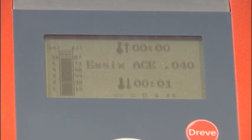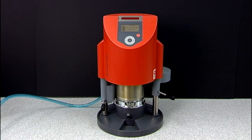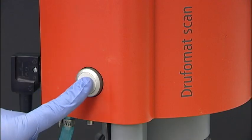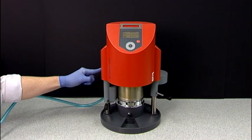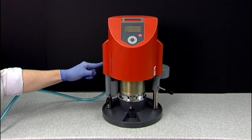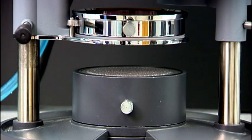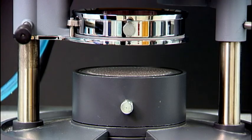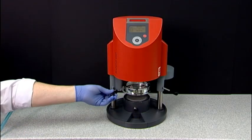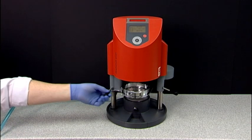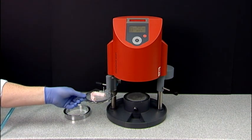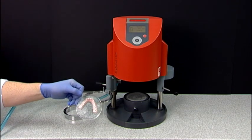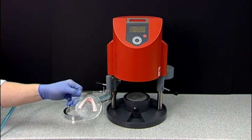Once the timer counts down to zero, you will hear a short beep which indicates the cooling process is complete. Press and hold the white button on the left side of the Drufomat as the air releases and the chamber lifts from the model. Using the lever on the left, pull towards you and away from the base. Remove the tension ring off the plastic. Your thermoformed Essex Ace plastic is now ready to be trimmed and polished.